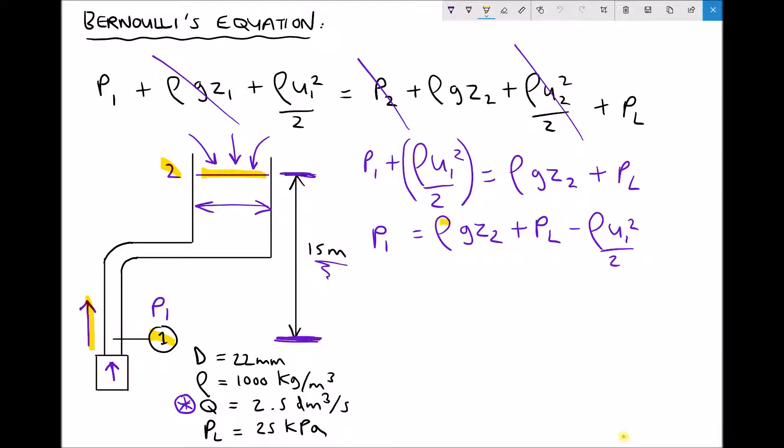So we know the density that's given in the question here. We know gravity is 9.81 and we know the elevation at position 2. We know the pressure loss. The only thing that we don't know before we can calculate the pressure at position 1 is the velocity of the fluid at position 1 or the velocity of the fluid flowing through the pipe. So the velocity is going to be constant throughout that whole section of pipe.